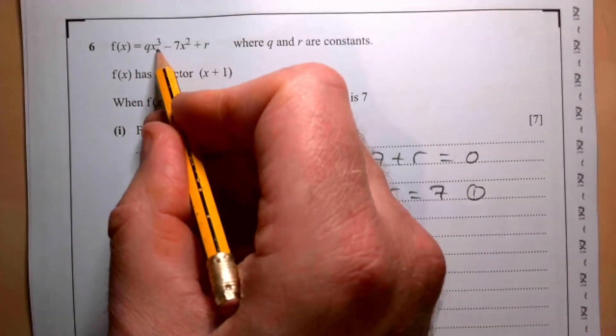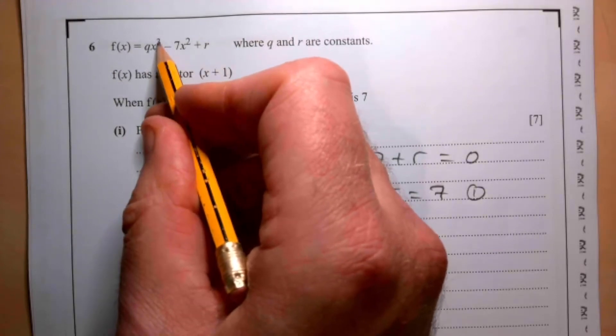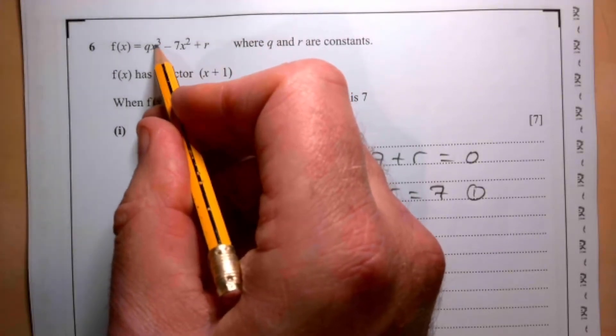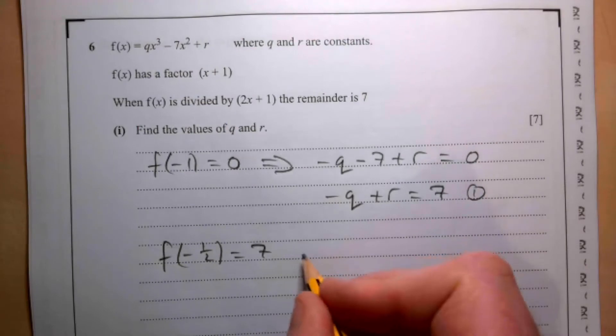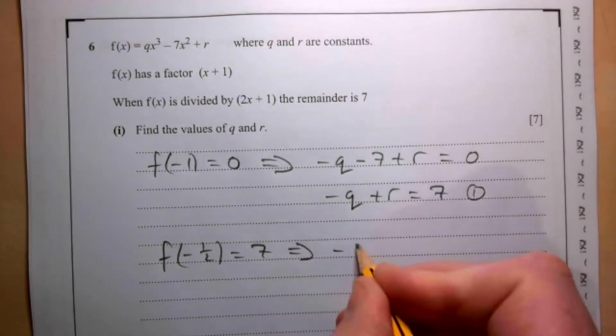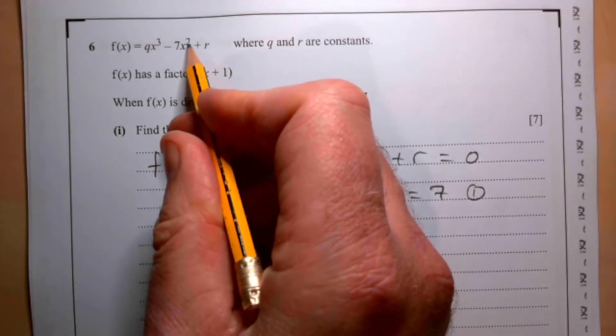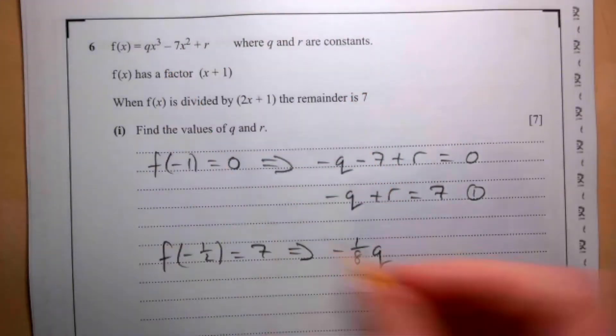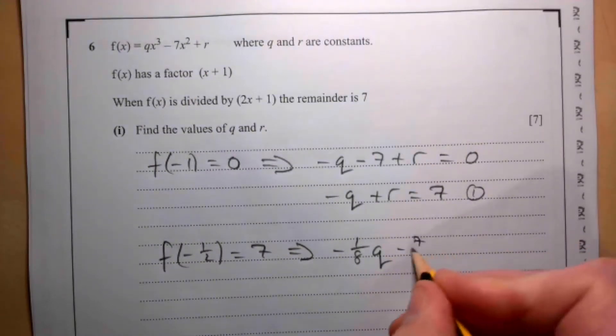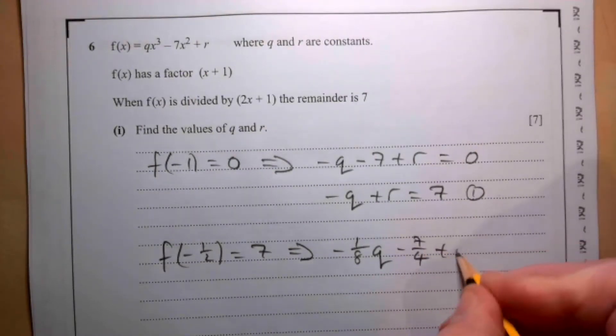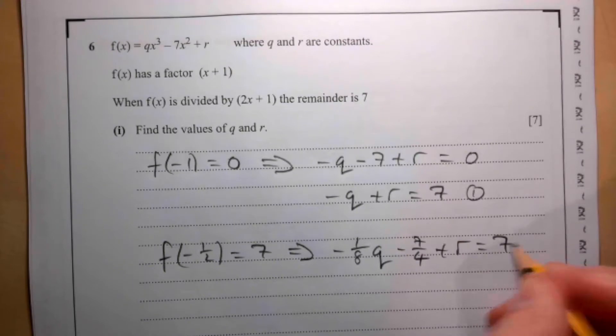So -1/2 cubed gives me -1/8, so that's -1/8 q. -1/2 squared gives me 1/4, so that's -7/4 + r, and that equals 7.